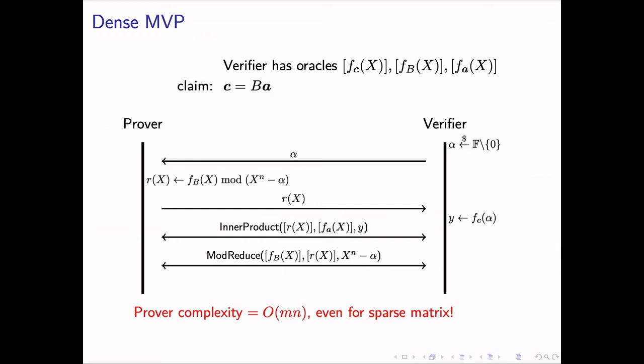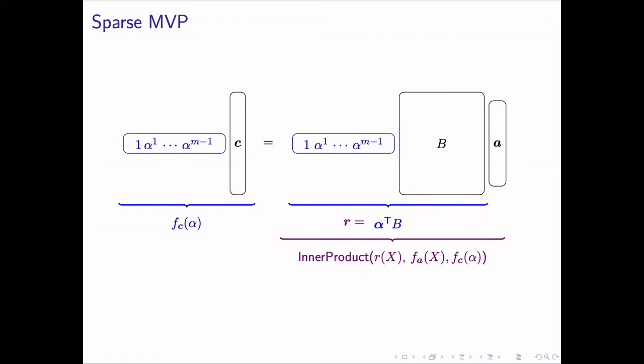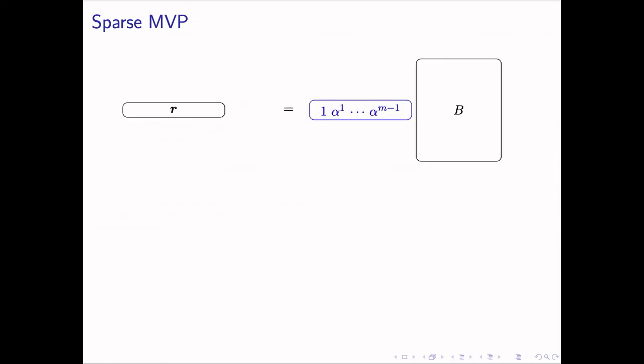Therefore, for a sparse matrix, where the number of non-zero entries is much smaller than the total number of entries, we suggest an alternative protocol, where the running time of the prover depends only on the number of non-zero entries. To explain the sparse MVP protocol, we look at the identity C equals B*A again. We multiply the alpha vector to both sides, as we did before. The left-hand side is still F_C(alpha), and the right-hand side is the inner product between R and A. Different from dense MVP, after the prover sends R(x) to the verifier, instead of using the mod-reduce protocol as in dense MVP, we let the verifier validate R(x) with another approach. Now, the original problem has been reduced to checking this new identity. We apply Schwartz-Zippel lemma again by multiplying another random vector, which we call the beta vector to both sides of the equation, where beta is sampled independently from alpha.